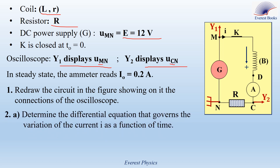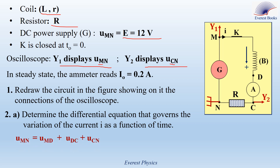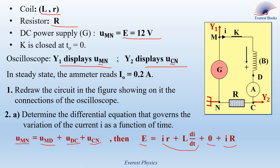Part 2A: Determine the differential equation that governs the variation of the current I as a function of time. Using Kirchhoff's voltage law, UMN is equal to UMD plus UDC plus UCN. UMN is the voltage across the power supply, equal to E. UMD is the voltage across the coil; since the positive sense is oriented from M to D, UMD equals rI plus L·dI/dt. UDC is the voltage across the ammeter; since the ammeter has no resistance, UDC equals zero. UCN is the voltage across the resistor, equal to I times R. Taking I as a common factor, we get the differential equation governing the variation of current I.